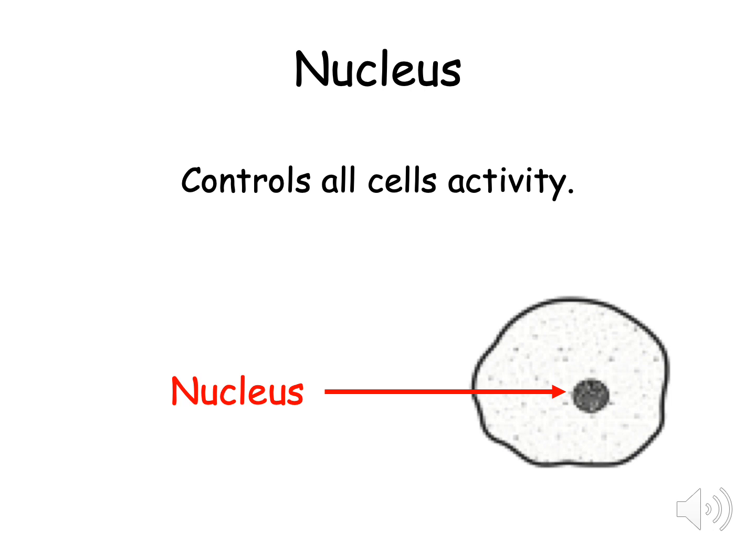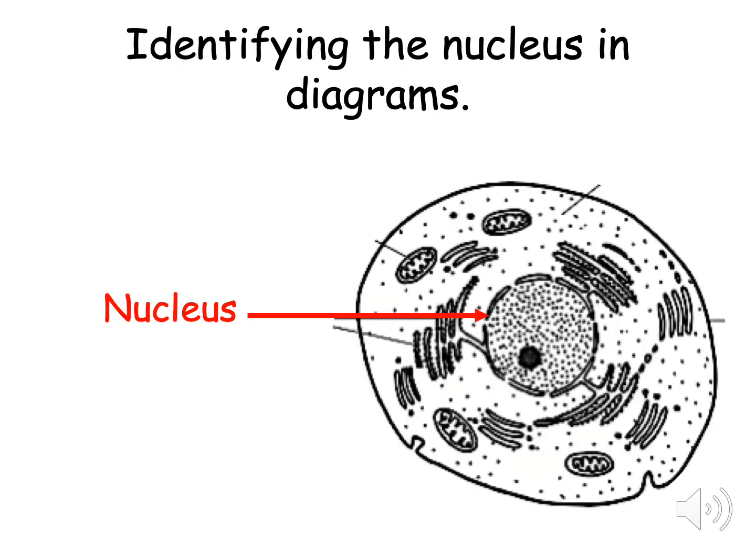The nucleus is the part of the cell that controls all the cell's activity. It also contains all the genetic information which we also know is called DNA. The nucleus is usually represented in diagrams by a black dot. Sometimes it can be tricky to identify the nucleus in a diagram however. It can look like a large black dot or in harder diagrams like this one, the nucleus can look like a circular structure with a black dot in the middle.